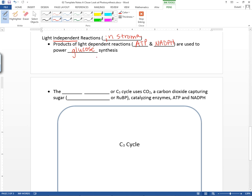So on to the back of your paper. It says the Calvin cycle, or the C3 cycle, uses carbon dioxide, a carbon dioxide-capturing sugar. In this case, it has a fancy name of ribulose-biphosphate, or we like to call it RuBP for short. We have a series of enzymes that are catalyzing the reaction. We use ATP and NADPH, like we said just a minute ago.